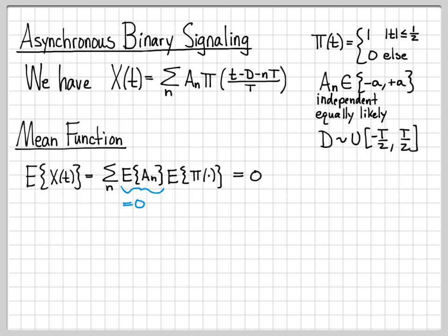So this entire sum turns into zero because this is equal to zero. Therefore, the mean function of the asynchronous binary signaling random process is zero.